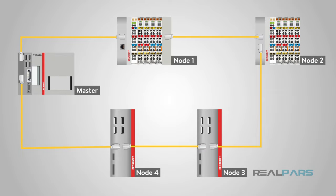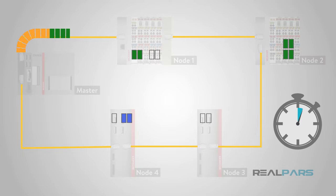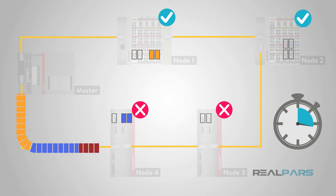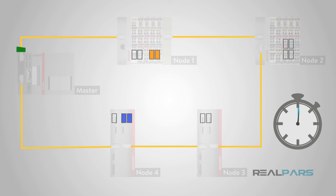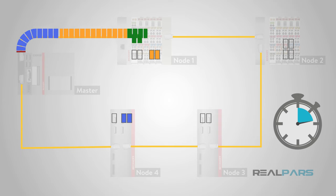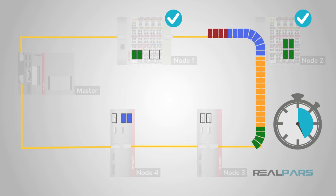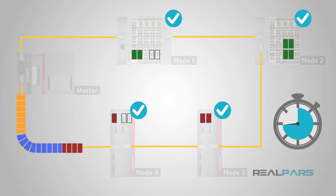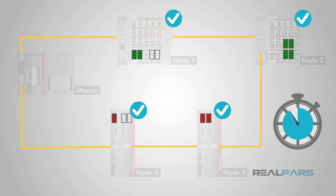This advantage can also be a disadvantage. Many devices may not be able to handle these highly decreased cycle times, and an EtherCAT network may need to be slowed to accommodate these devices. Since the EtherCAT network can be slowed, mark the disadvantage as an advantage once again.